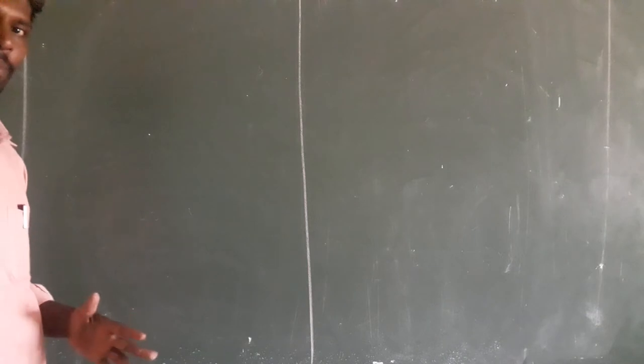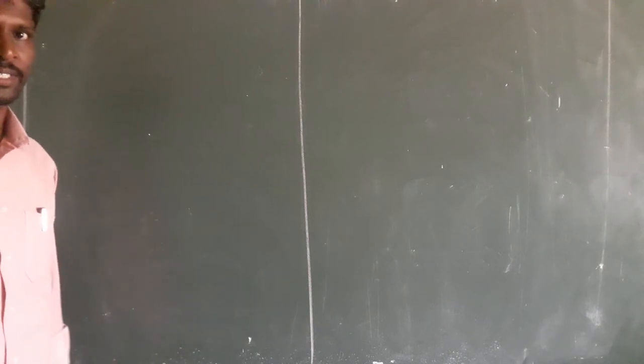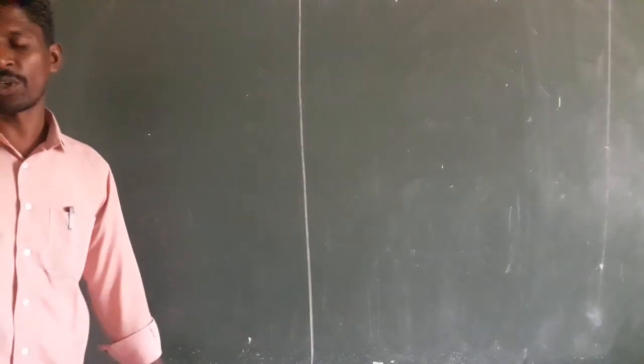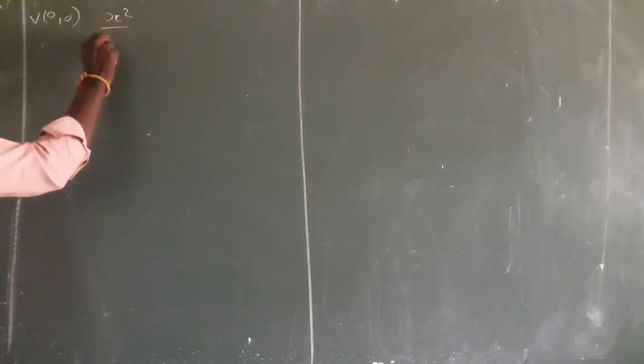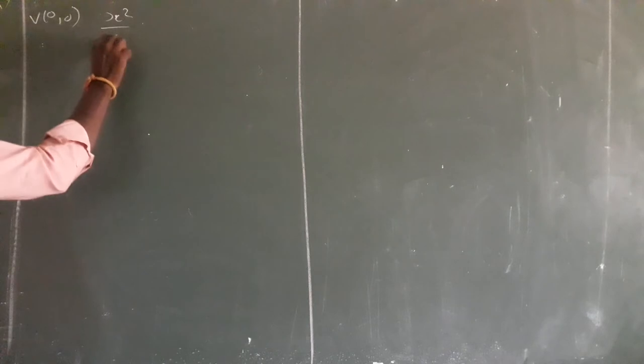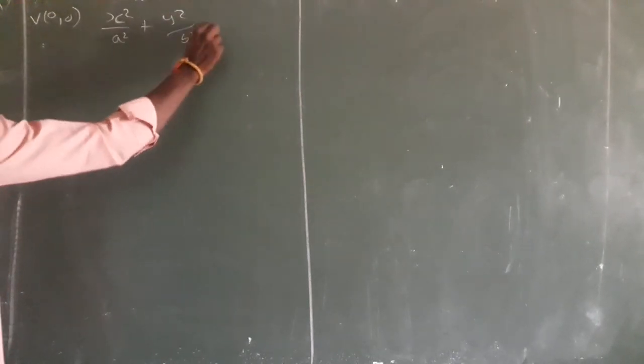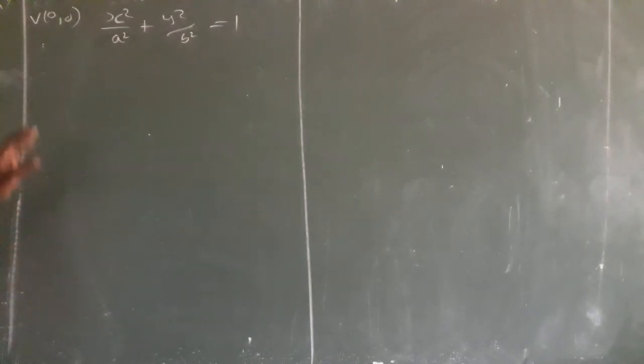Now I am going to explain and improve the ellipse. In ellipse there are two types: parallel to x-axis and parallel to y-axis. In parallel to x-axis, when the center is at (0,0), the equation of the ellipse is x squared by a squared plus y squared by b squared equal to 1. This is the equation of the ellipse when the center is at (0,0).